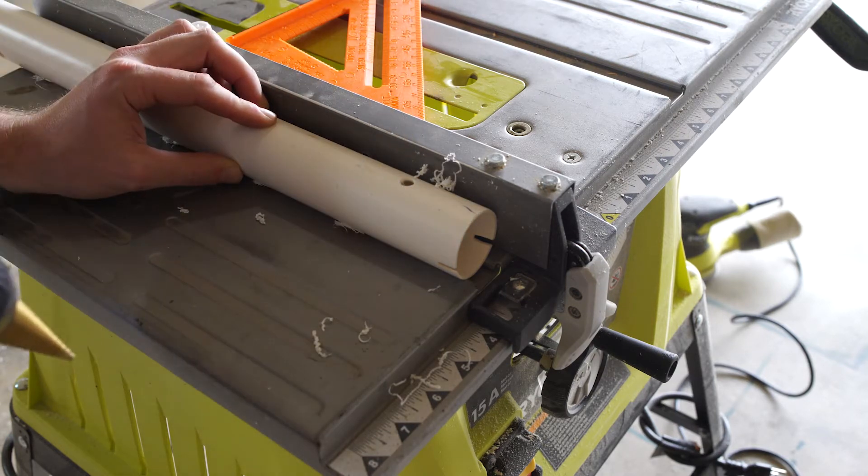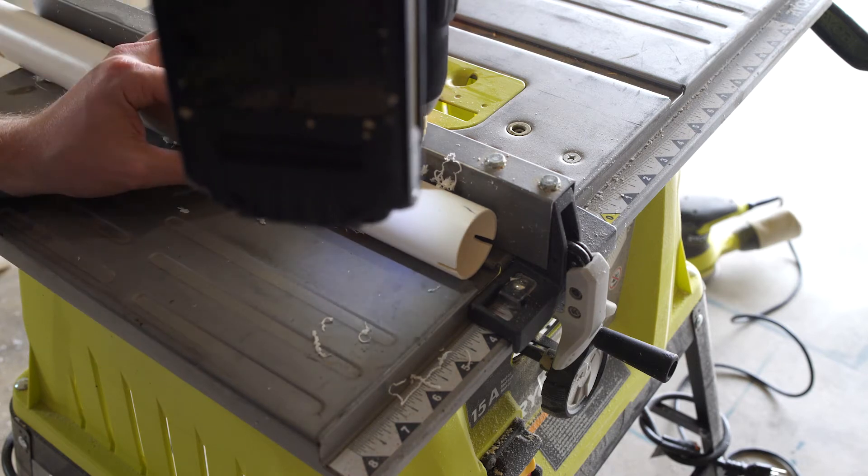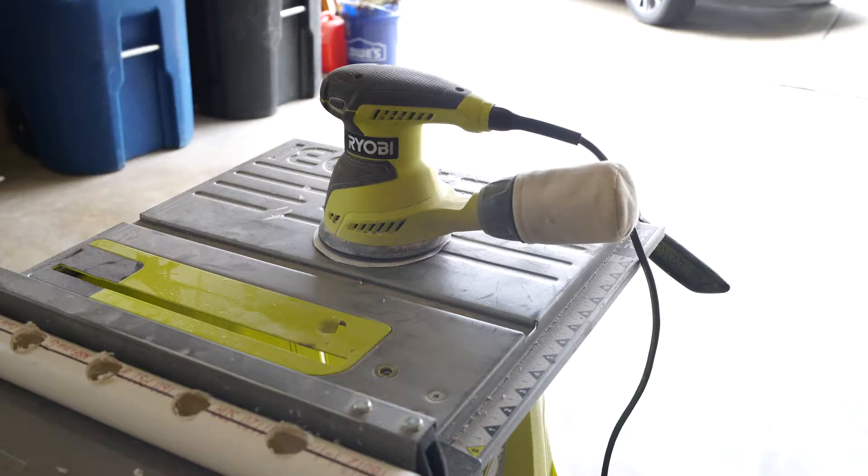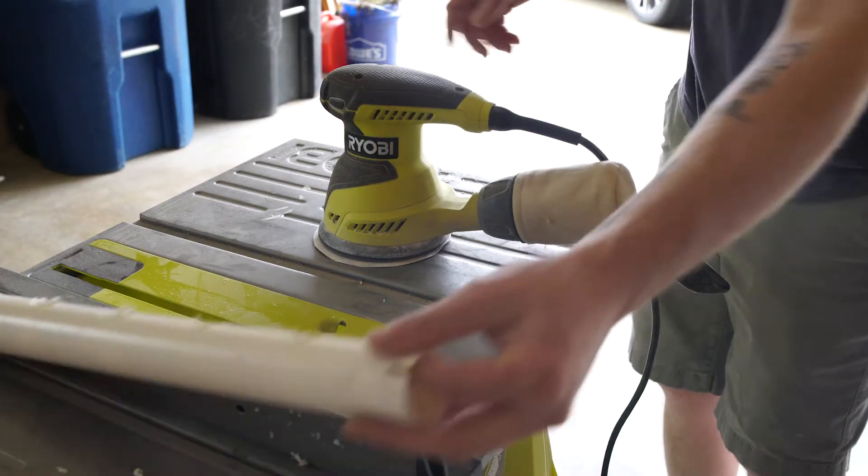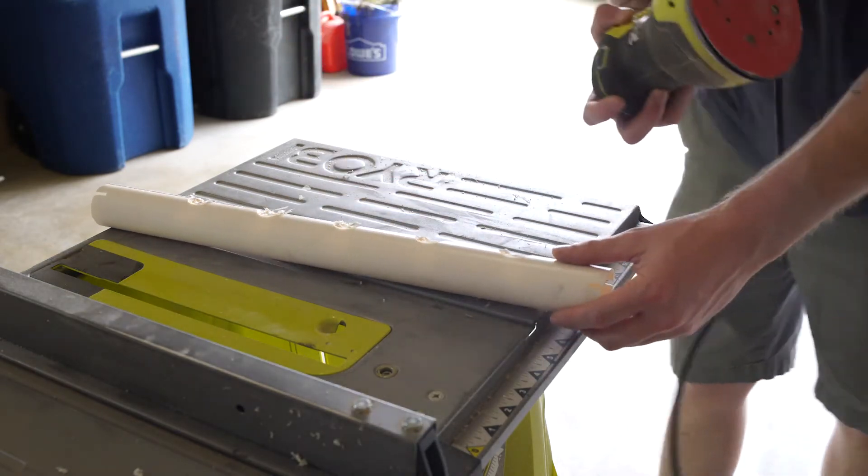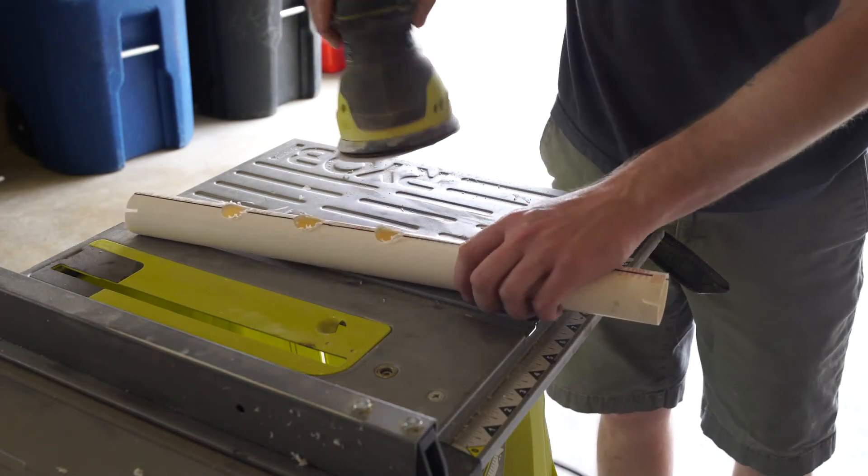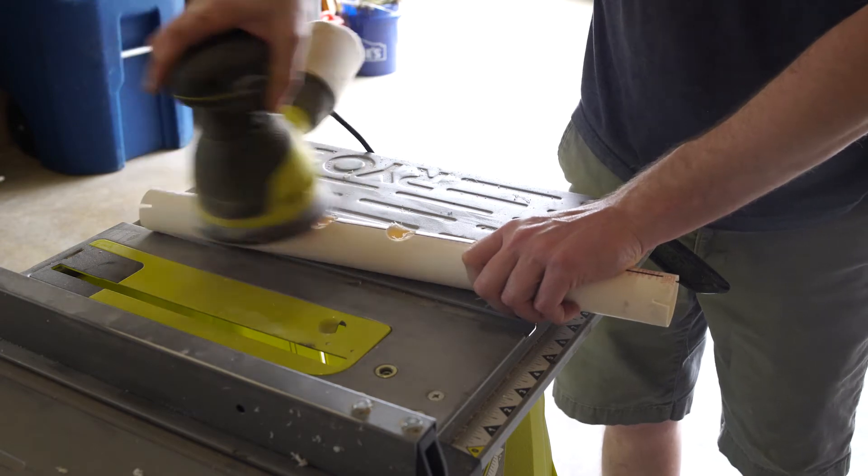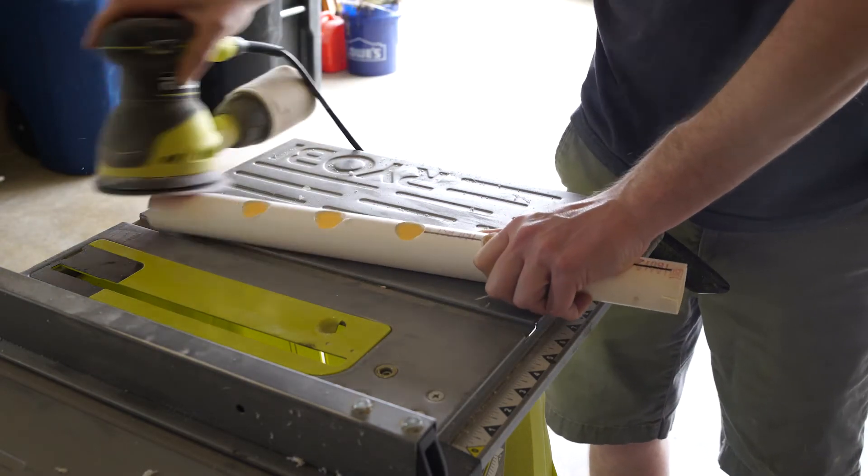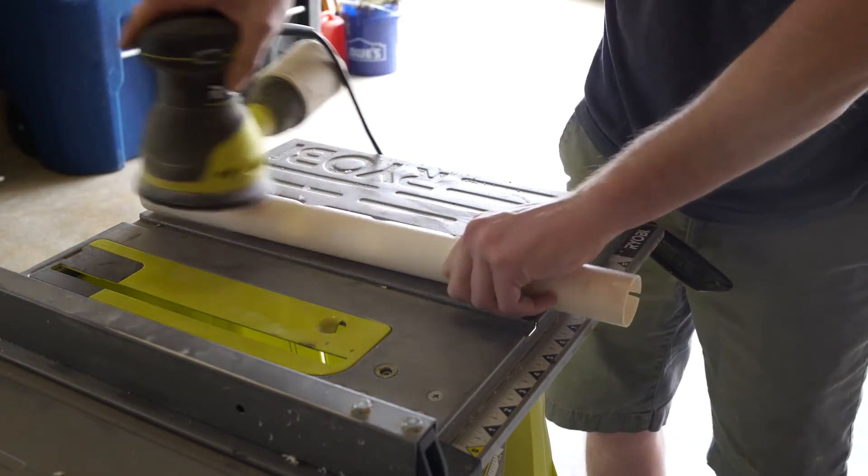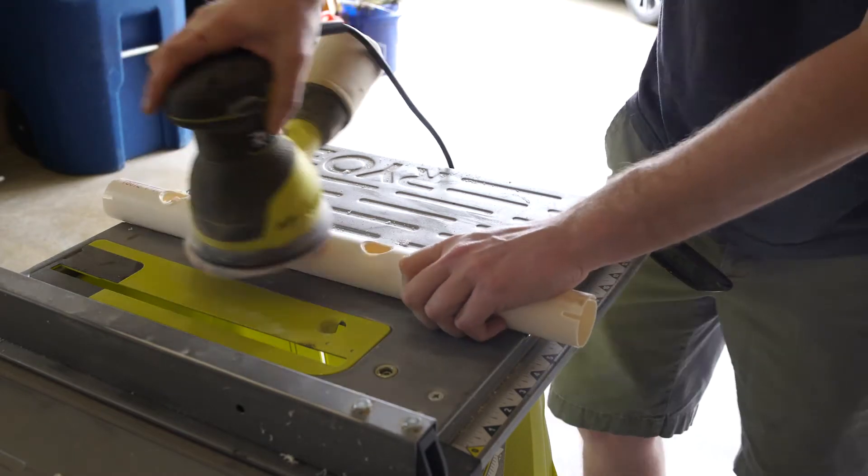Now that our holes are cut, let's clean up this pipe a little bit. I'll be using an orbital sander, but if you don't have one, you can always use some sandpaper and some elbow grease.